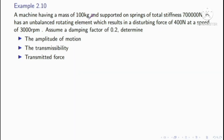Next problem: a machine having a mass of 100 kilogram and supported on springs of total stiffness 7 into 10 raised to 5 Newton per meter has an unbalanced rotating element which results in a disturbing force of 400 Newton at a speed of 3000 RPM. Assume a damping factor of 0.2. Determine amplitude of motion, transmissibility, and transmitted force.